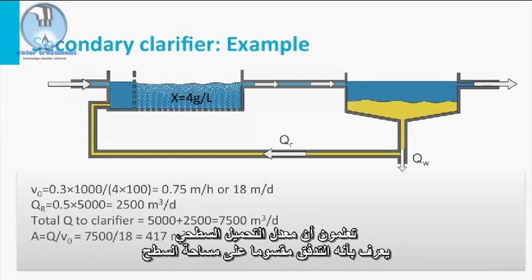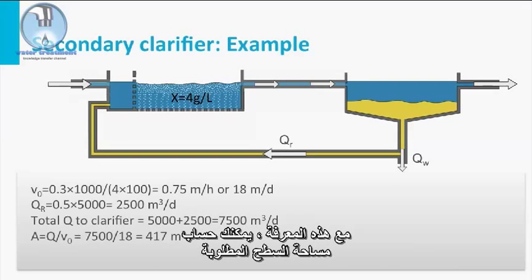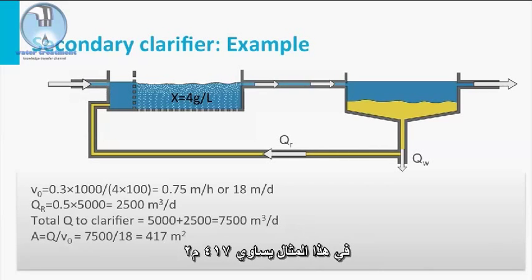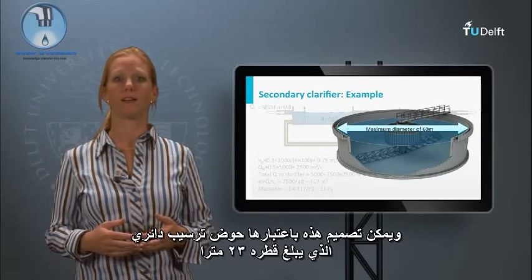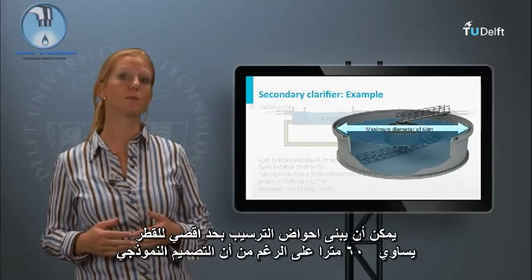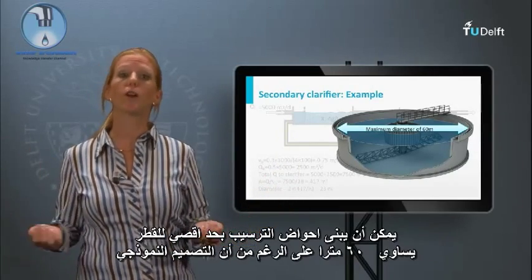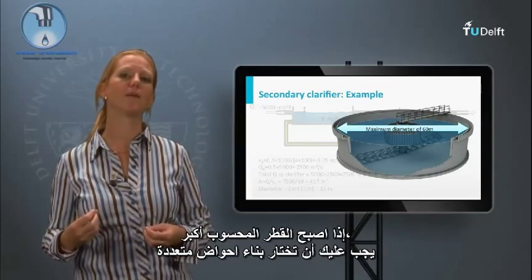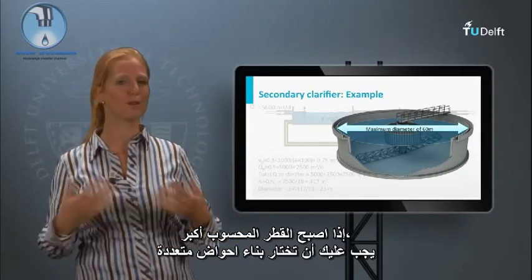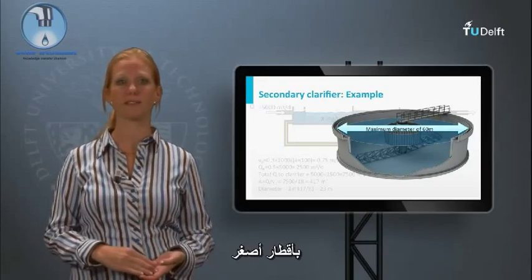You know that the surface loading rate is defined as flow divided by the surface area, so with that knowledge you can calculate the required surface area. In this example that equals 470 square meters. This could be designed as a round clarifier with a diameter of 23 meters. Clarifiers can be built with maximum diameters of 16 to 40 meters. If the calculated diameter becomes larger, you should choose to build multiple clarifiers with smaller diameters.